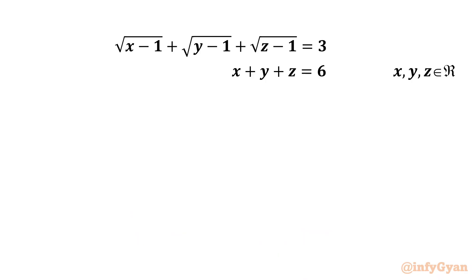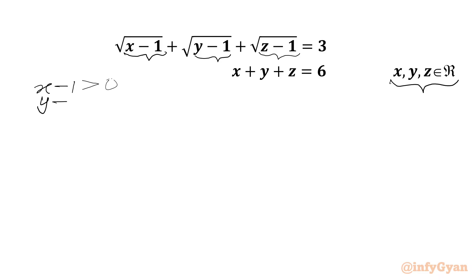For the real values of x, y, and z, the radicands must be positive. So we write: x minus 1 should be positive, y minus 1 should be positive, z minus 1 should be positive. From here we can say x, y, z must be greater than 1.